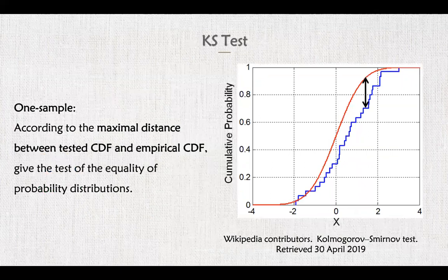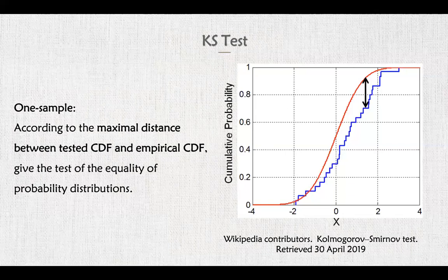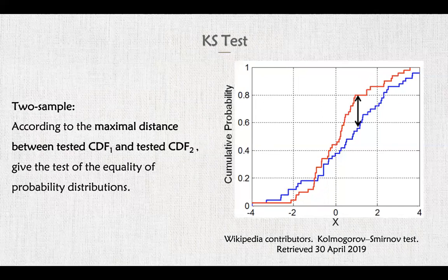The third part is the KS test of the empirical data. KS test is a kind of non-parametric test used to compare a sample with a reference probability distribution, which is called the one-sample KS test, or to compare two samples, which is called the two-sample KS test. The KS test quantifies a distance between the empirical distribution function of the sample and the cumulative distribution function of the reference probability distribution in the one-sample KS test, or between two empirical distribution functions in the two-sample KS test. Therefore, the maximal distance is the key of the KS test.